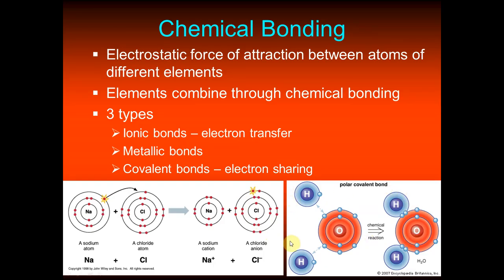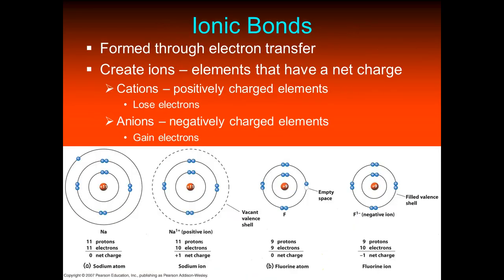In a covalent bond, take water as an example. Each hydrogen brings one electron to the table; the oxygen brings one electron to the table. When they bond, they share that pair of electrons. The same applies to the second hydrogen — it brings one electron, the oxygen brings one, and they share that pair. That's a covalent bond.